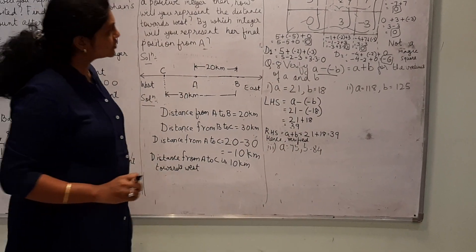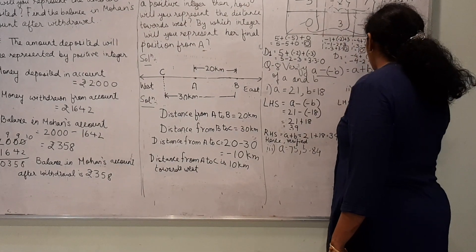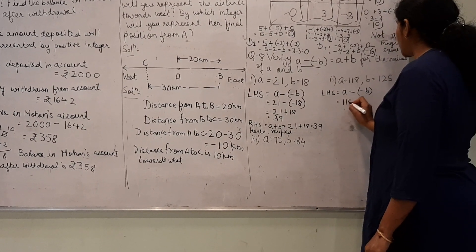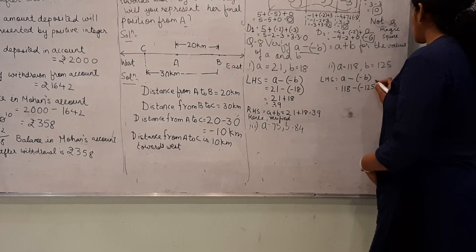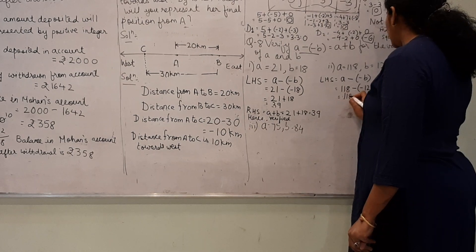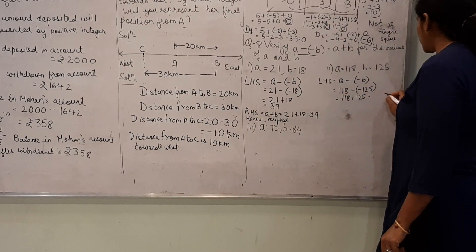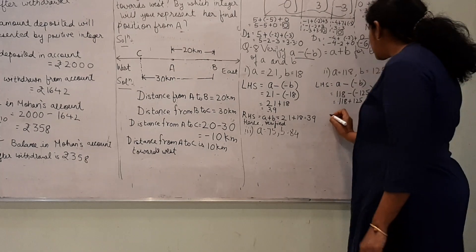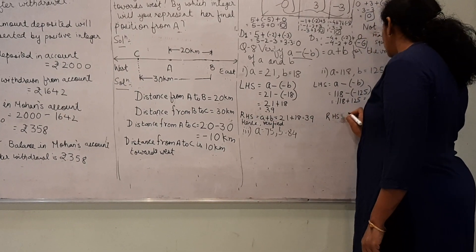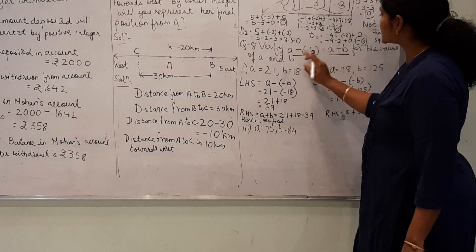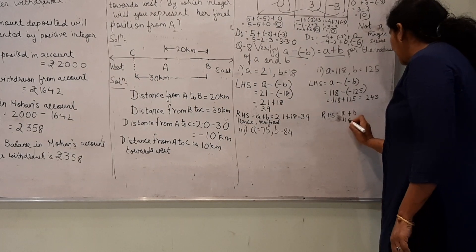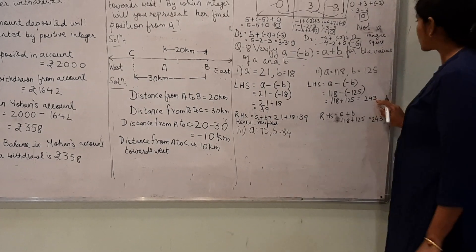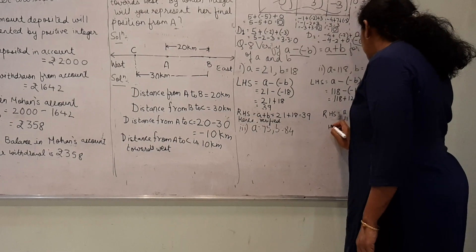Similarly for question 2: LHS is A minus (-B), where A = 118 and B = 125. So 118 minus (-125) equals 118 plus 125 equals 243. RHS is A plus B equals 118 plus 125 equals 243. Both are equal. Hence verified.